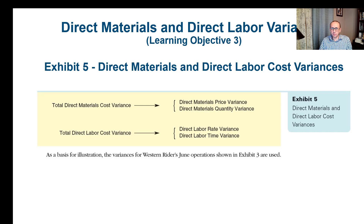Each of those two components — direct material and direct labor — has its own cost variance divided into two parts: the price variance and the quantity variance. For direct material, we have the direct material price variance and the direct material quantity variance. Similarly, for direct labor, we have the direct labor rate variance (similar to price) and the direct labor time variance (similar to quantity).